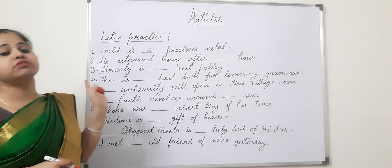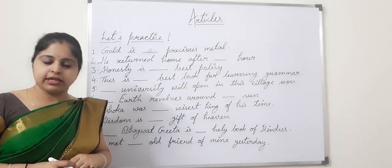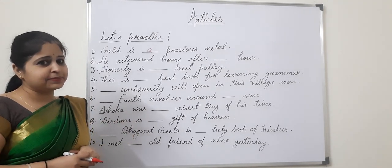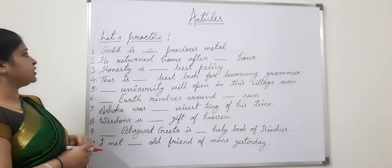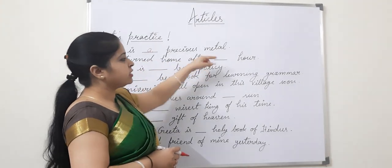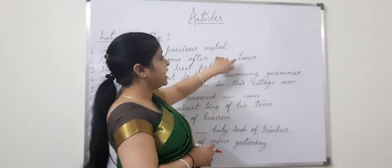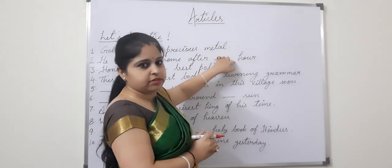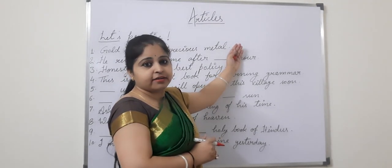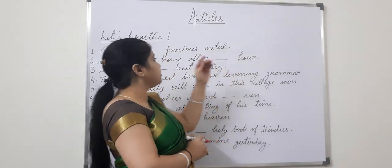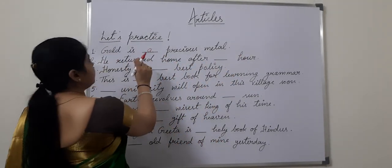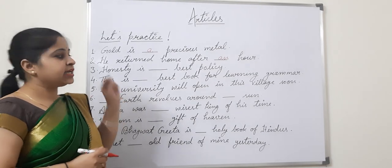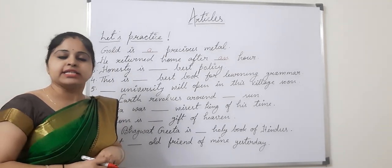Next sentence: 'He returned home after an hour.' The word 'hour' is beginning with H, which is a consonant, but we focus on the beginning sound. The beginning sound is a vowel sound — 'our'. So we put 'an' before it: 'He returned home after an hour.'